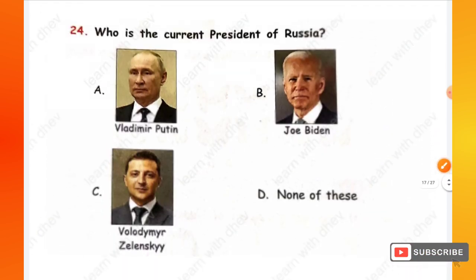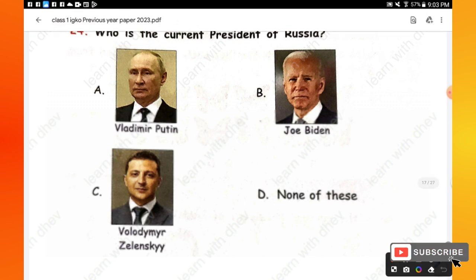Question 24: Who is the current president of Russia? Option A is Vladimir Putin, option B is Joe Biden, option C is Volodymyr Zelensky, option D is none of these. The Russian president is option A — Vladimir Putin.